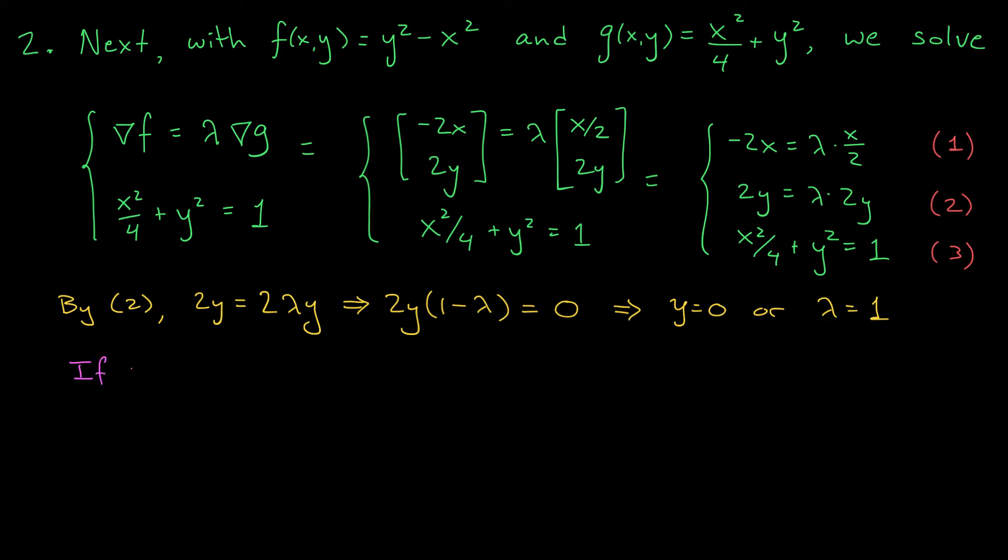First, what happens when y is 0? Using equation 3, I think we should be able to solve for x. If y is 0, then by 3, we get x squared over 4 plus 0 squared equals 1. Move that 4 to the other side, we get x squared equals 4, or equivalently, x equals plus or minus 2. Ah, great! We found two extreme values along the boundary, 2, 0 and minus 2, 0. But of course, we're not done.